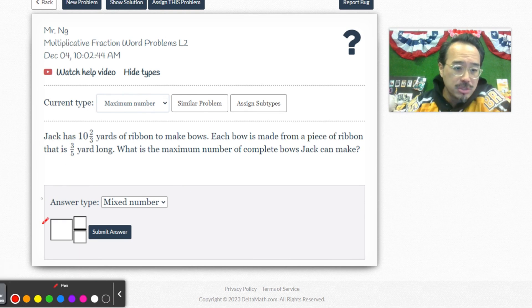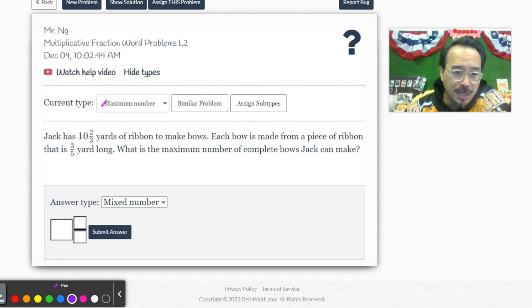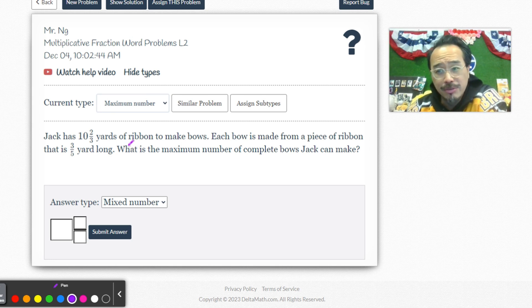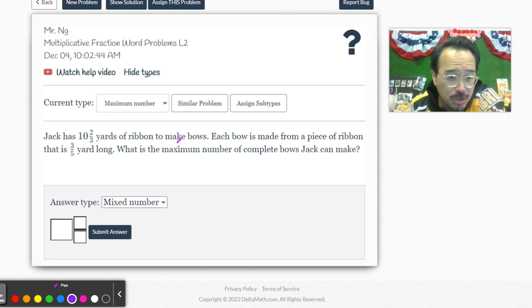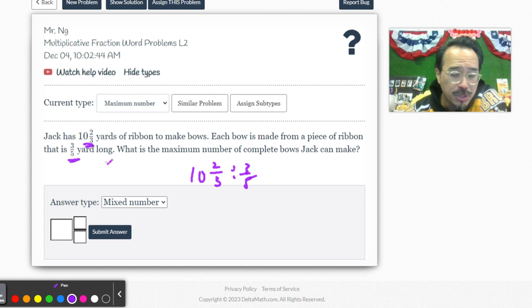Question number one: Jack has 10 and two-thirds yards of ribbon to make bows. Each bow is made from a piece of ribbon that's three-fifths. The question isn't different from last night's division problems because we're still asking how many times can three-fifths fit into ten and two-thirds.